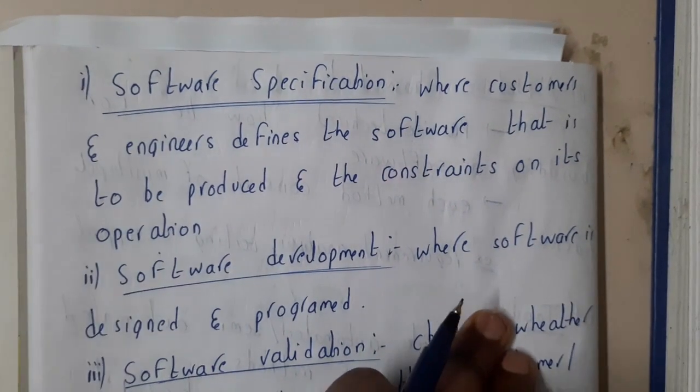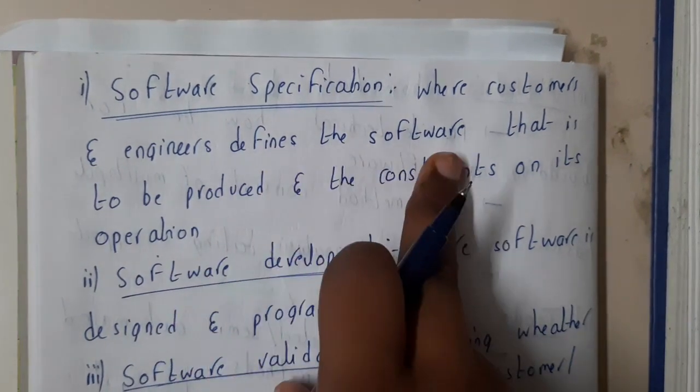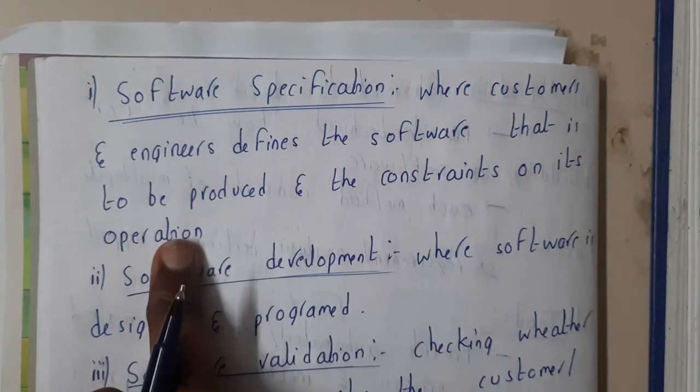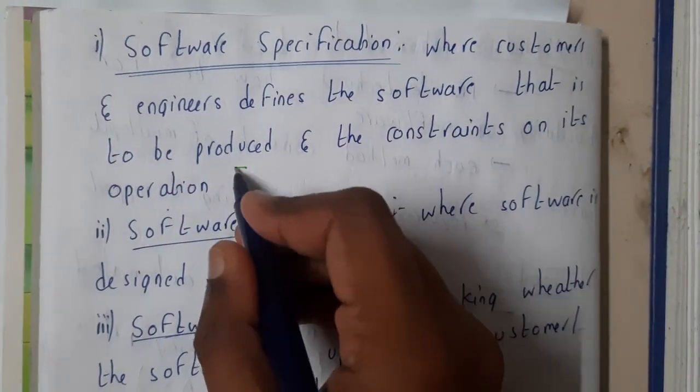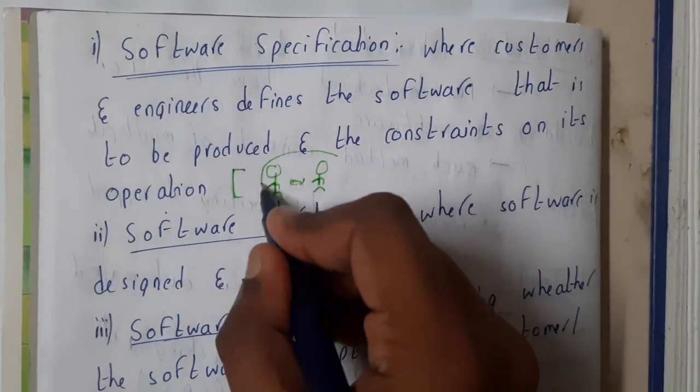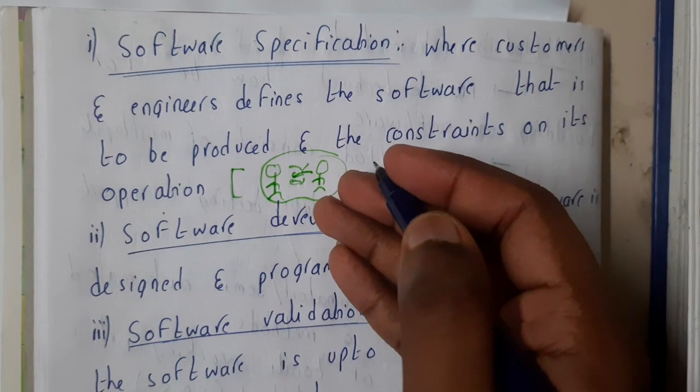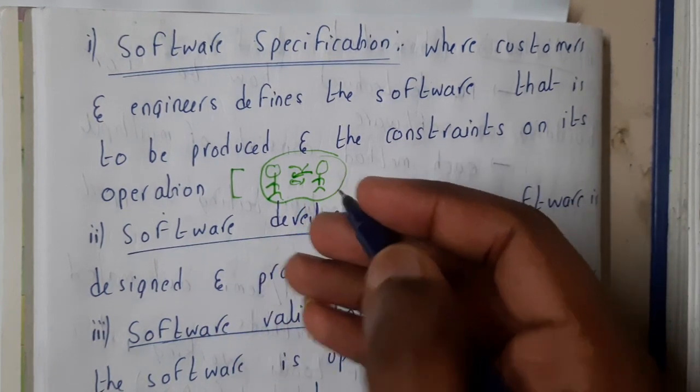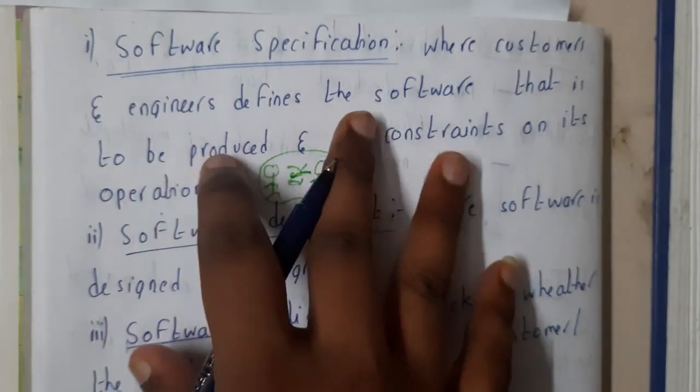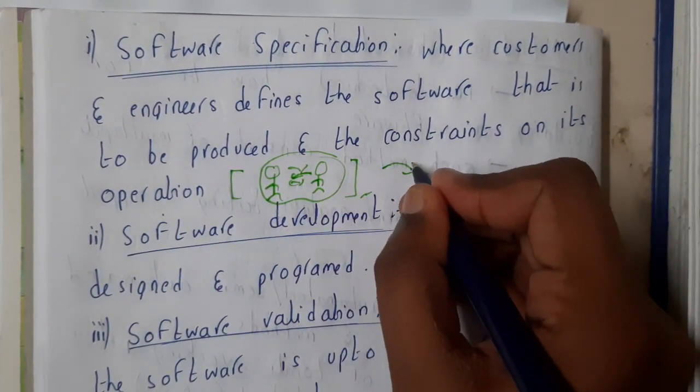Software specification is where customer and engineer define the software that is to be produced and the constraints on the operations. So basically software specification is nothing but the client and the developer will have a meeting. They will be discussing about the requirements and the software developer will be giving his ideas like we can solve it in this way or that way. I hope everyone got a small idea on software specifications. Remember that both-way interaction will be done: user will be saying his requirements and the client will be informing his answers or solutions to that.